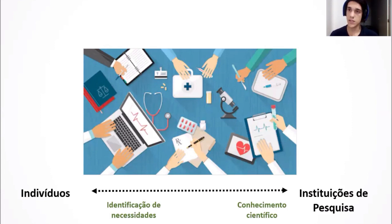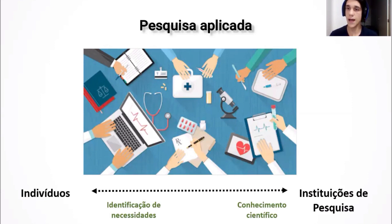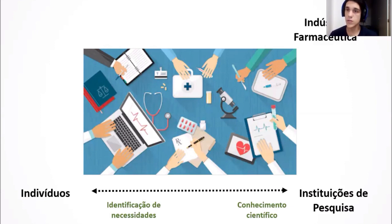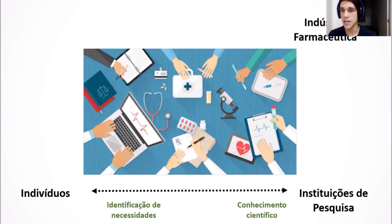A função direta da instituição de pesquisa é o que chamamos de pesquisa aplicada — ela é mais facilmente aplicada na sociedade, nos indivíduos, em forma de um produto ou uma prática. É nesse momento que surge um terceiro agente: a indústria farmacêutica. A instituição de pesquisa vai produzir, com essa pesquisa aplicada, potenciais produtos. Esses produtos podem ser cedidos, comercializados, licenciados para a indústria farmacêutica, que tem os meios para tentar transformar isso num produto.